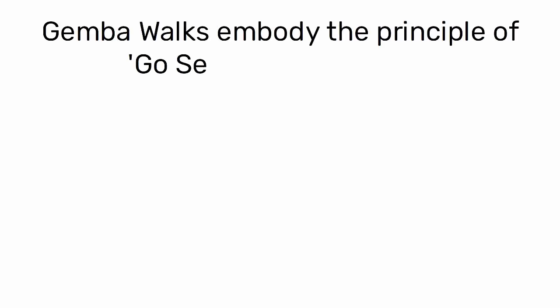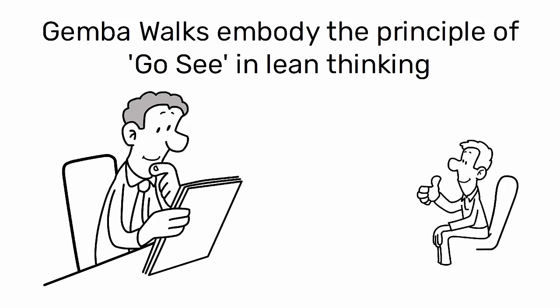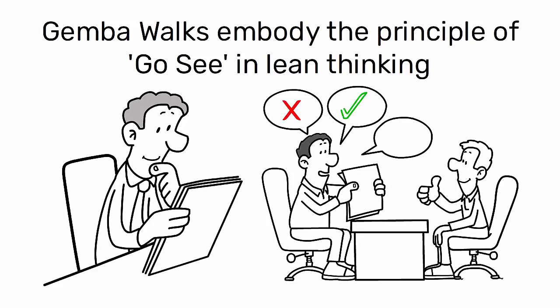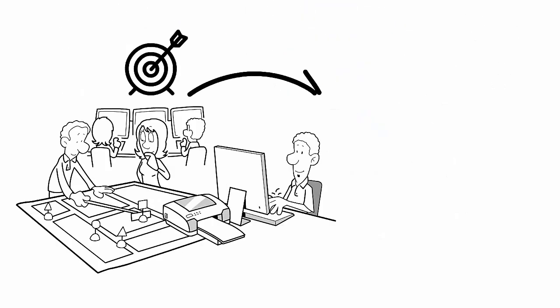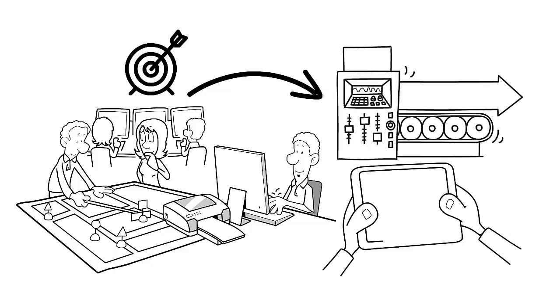Lastly, Gemba walks embody the principle of go see in lean thinking. It encourages decision-making based on empirical evidence gathered from the source, rather than assumptions or hearsay. This practice leads to more informed, effective decisions that enhance the overall performance of the manufacturing process.